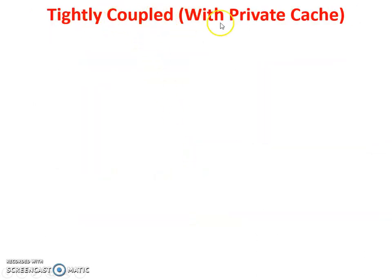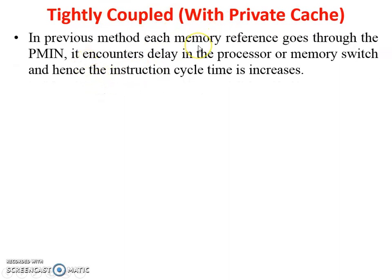In the tightly coupled with private cache model: in the previous method — without private cache — each memory reference goes through the PMIN, which introduces delay at the processor-memory switch and increases instruction cycle time. Also, if two processors want to access the same memory location and both arrive at PMIN finding the same block, there is a contention limitation. With private cache, the same data is available in each processor's private cache so they can share the same data.